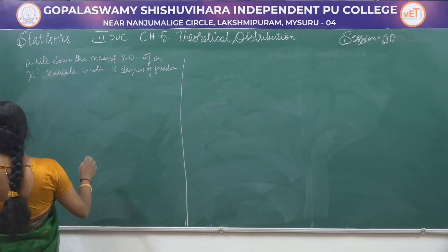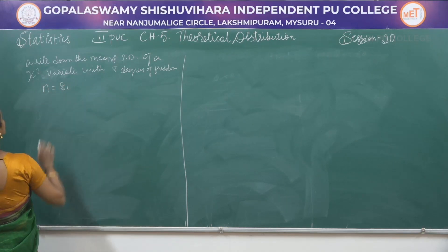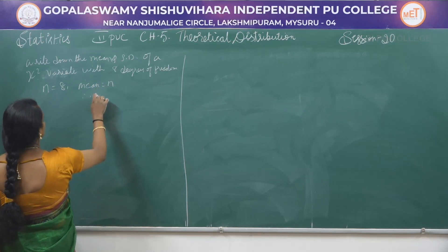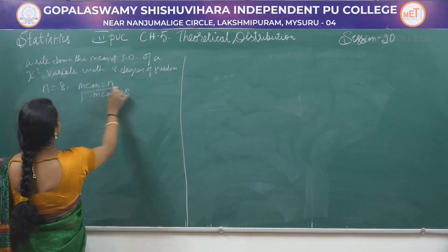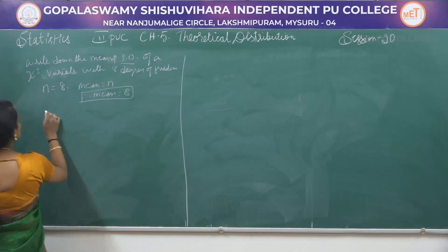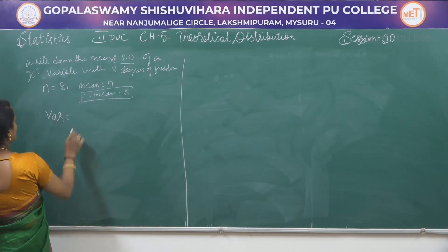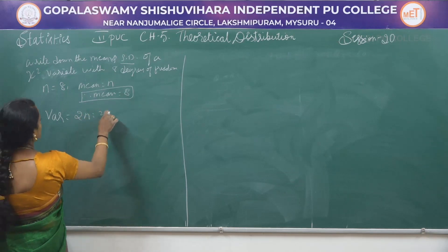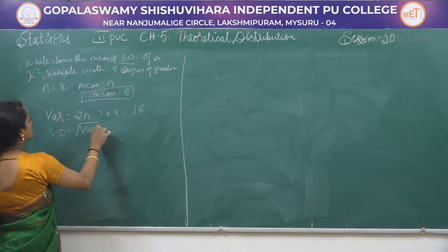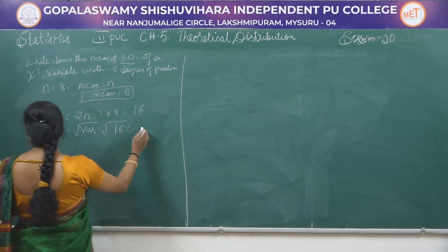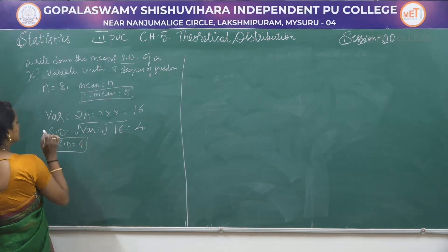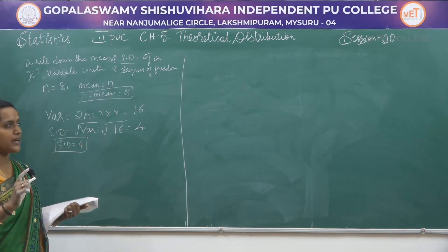Problem: Write down the mean and standard deviation of a chi-square distribution with 8 degrees of freedom. Here n = 8. In chi-square distribution, mean = n = 8. Variance = 2n = 2 × 8 = 16. Standard deviation = √16 = 4.